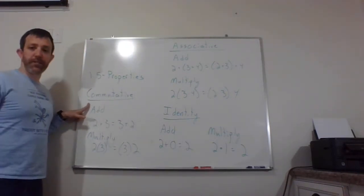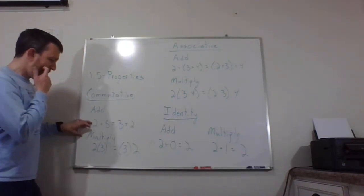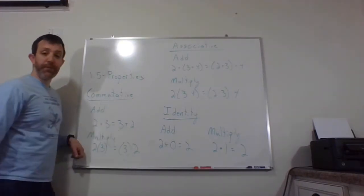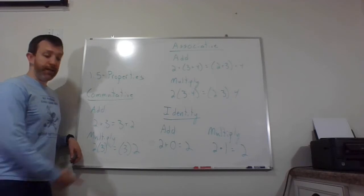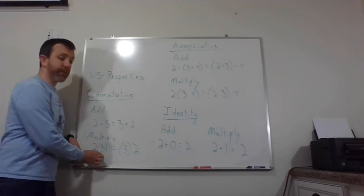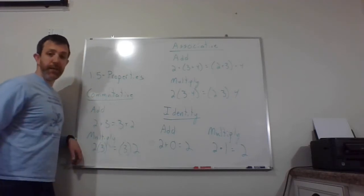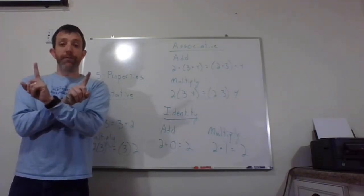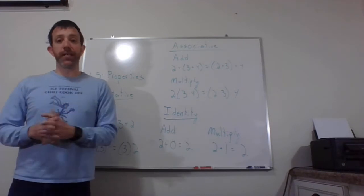Our first property is the commutative property. The commutative property for addition just tells us that two plus three and three plus two are the same thing. And same thing for multiplication. It tells us that two times three and three times two are the same thing. Basically, with the commutative property, you can switch the order for addition or multiplication without changing the outcome.